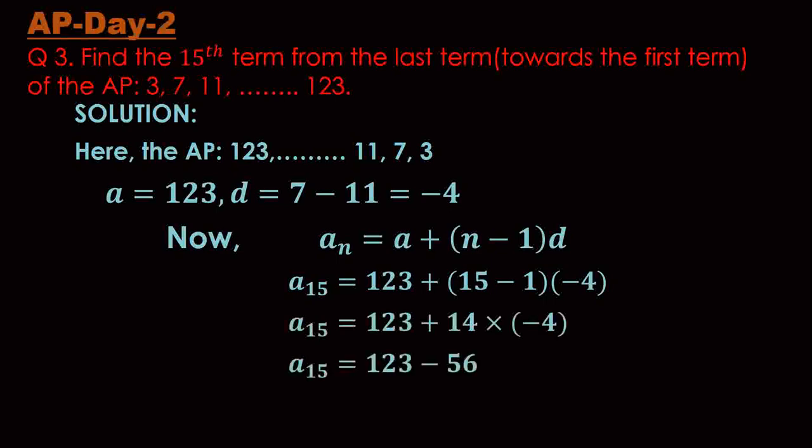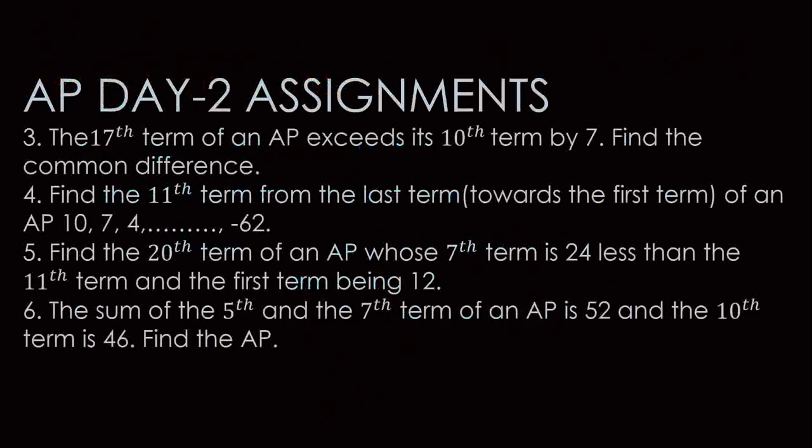Minus plus into minus is minus, so 14 into 4 is 56. So 123 - 56, a₁₅ = 67. So the 15th term from the last term towards the first term would be 67. Then that's the fourth question then, AP day 2.